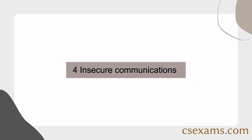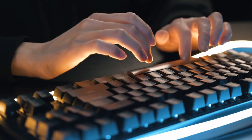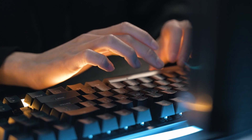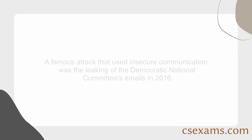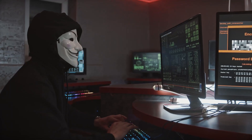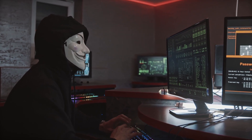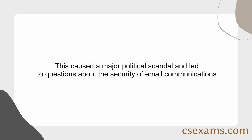Number 4: Insecure communications. Using outdated or unsalted encryption methods, not verifying SSL/TLS certificates, and not verifying message integrity can also lead to vulnerabilities. Insecure communication can be exploited by eavesdroppers or by attackers who intercept and read its contents. A famous example was the leaking of the Democratic National Committee's emails in 2016, which were intercepted by hackers who then released them to the public, causing a major political scandal.